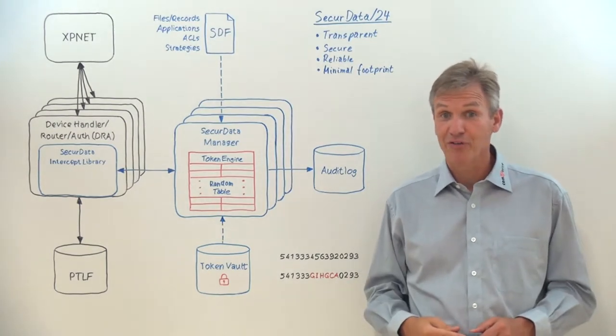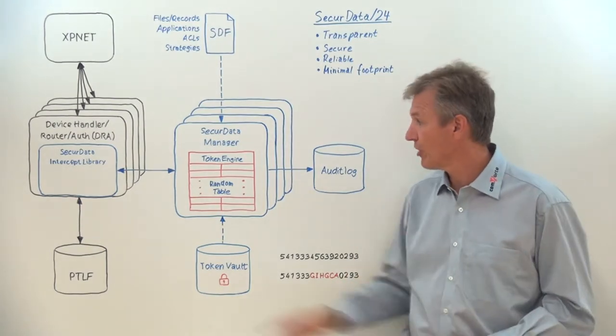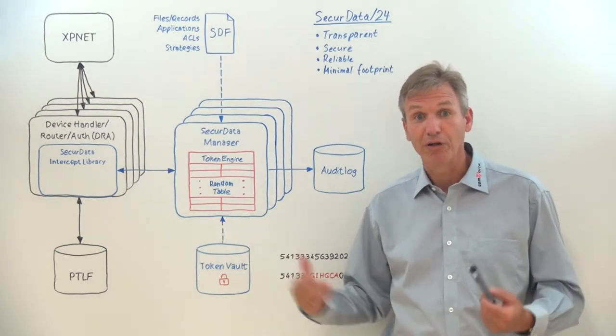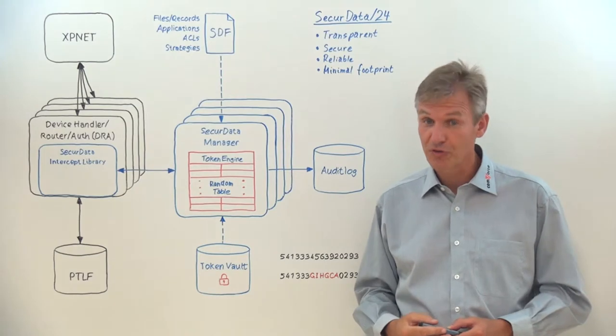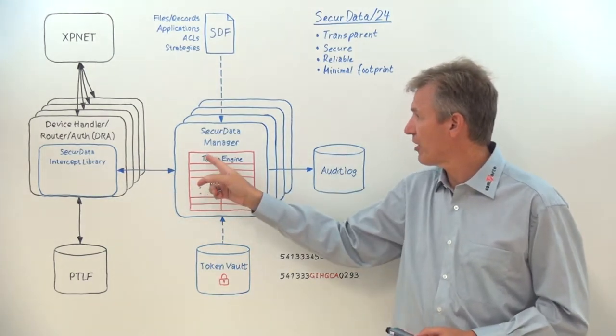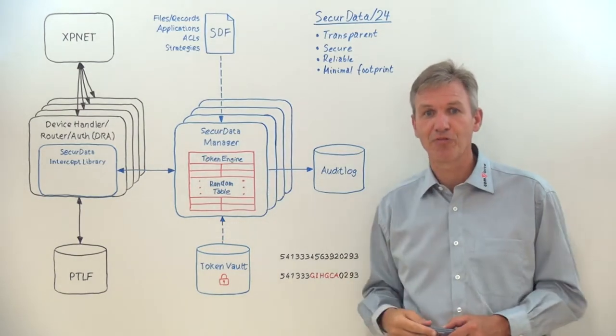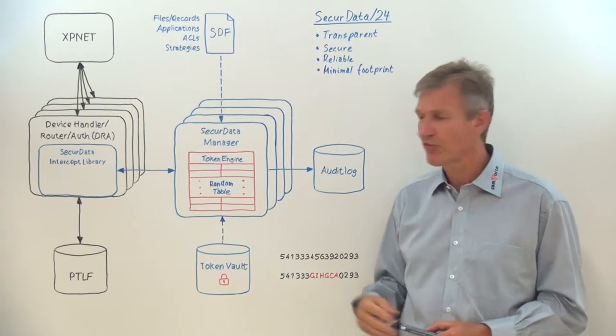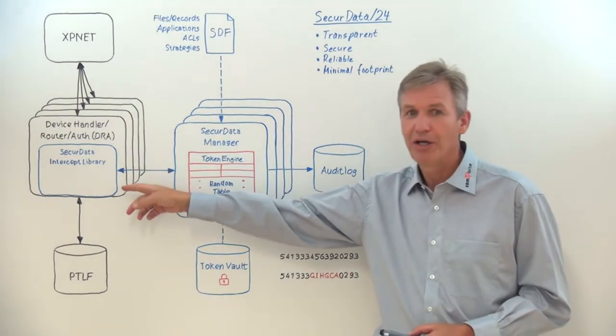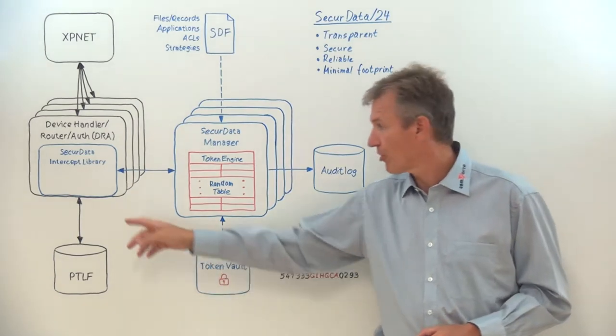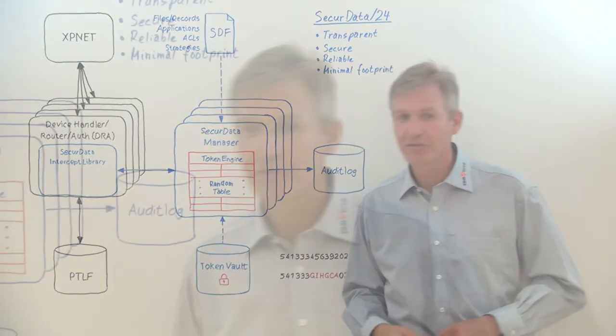Whenever the DRA is about to write a record into the PTLF, the intercept library will intercept the call to the system's write I.O. procedure and invoke the secure data manager to process the buffer and render the PAN unreadable. The intercept library will then call the system's write procedure with a modified buffer and write the actual record to the PTLF file.